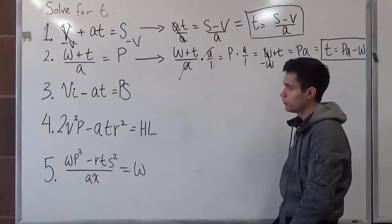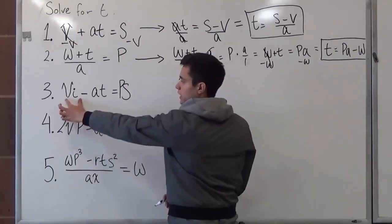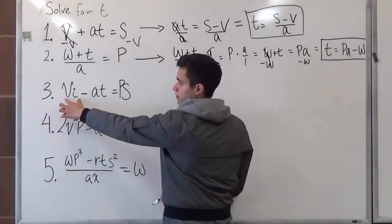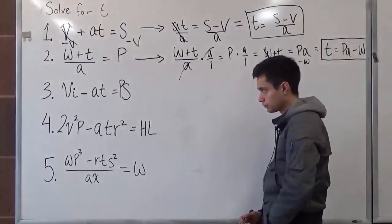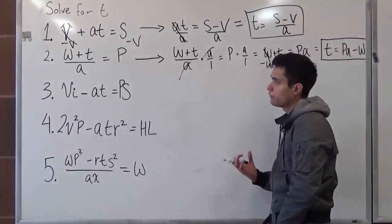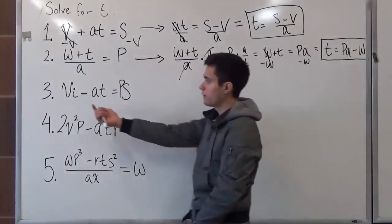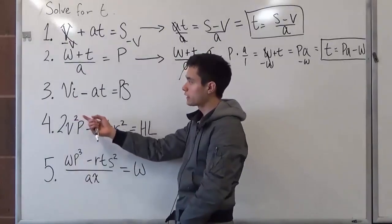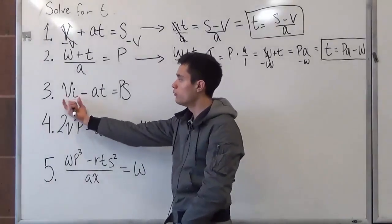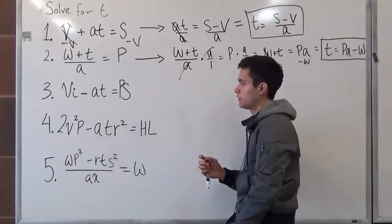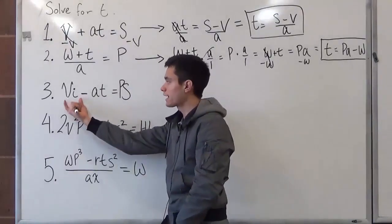So what we should do first is look at v times i as a whole. So don't get confused about, oh, since we have two values here, we have to subtract it. No, we just have to move the whole value on this side, which we're basically subtracting the whole value.